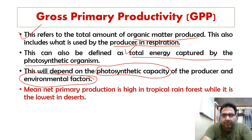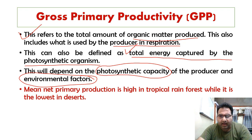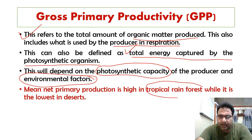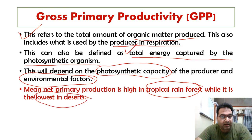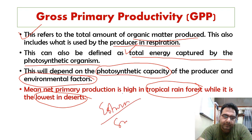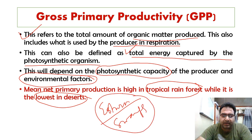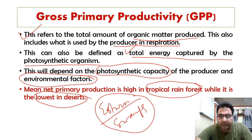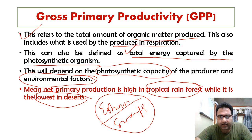Net primary production is high in tropical rainforests in the terrestrial environment. For the aquatic environment, it is high in estuaries and swamps. Gross primary production is also highest in estuaries and swamps, which is why these ecosystems are considered highly productive.